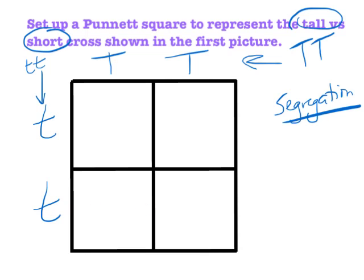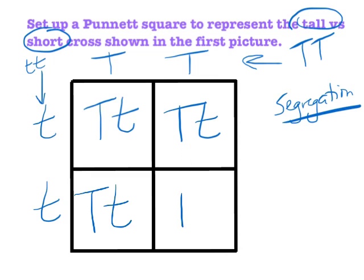Filling in the squares is straightforward. If this particular trait got passed on from the tall plant and this one from the short plant, that offspring would be big T, little t. Same thing for the other combinations — the little t gets carried across to the squares, the big T gets carried down. So all four squares come out big T, little t. Every single one of our possible offspring has the same genotype.